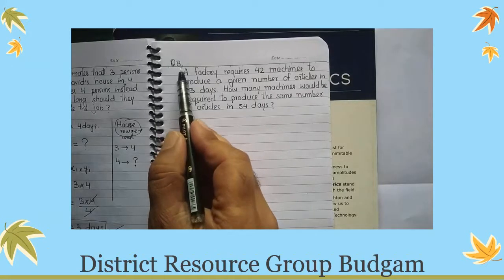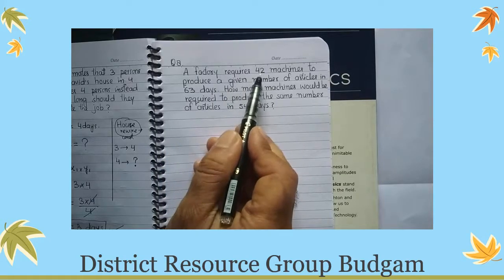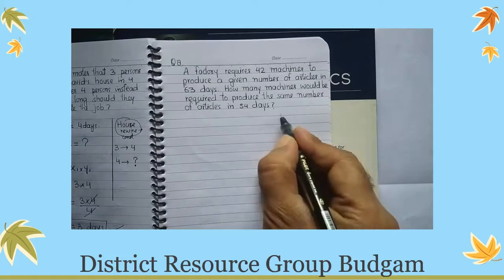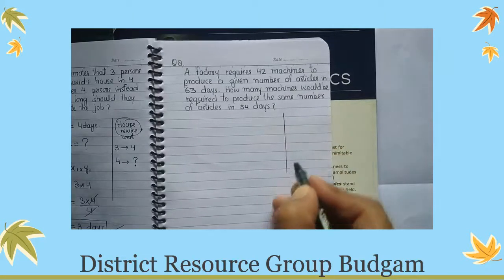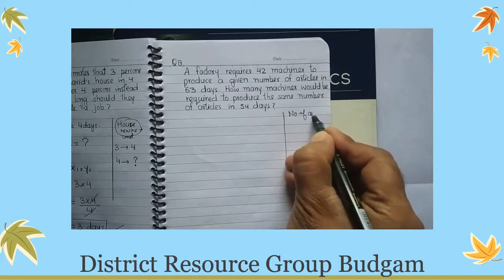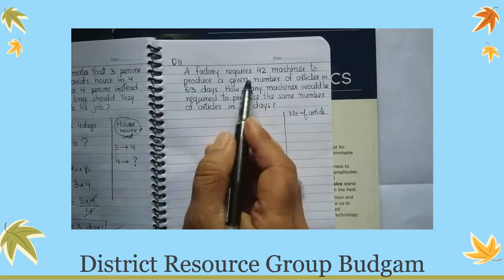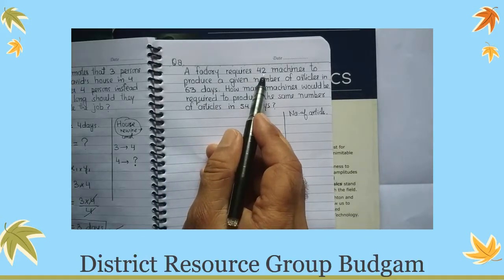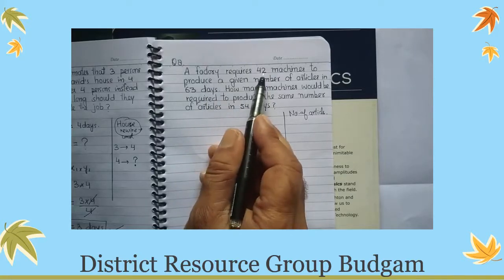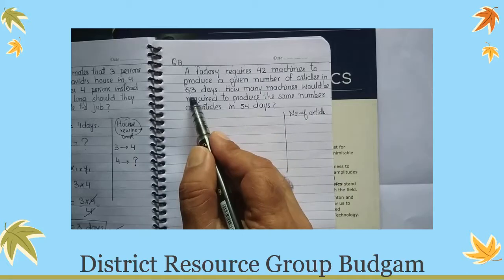Question number 8. A factory requires 42 machines to produce a given number of articles. A factory requires 42 machines to produce a given number of articles in 63 days.